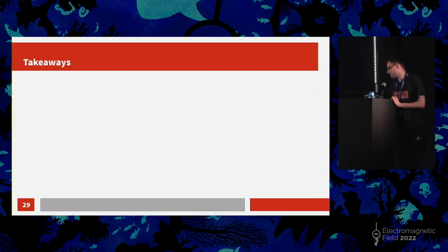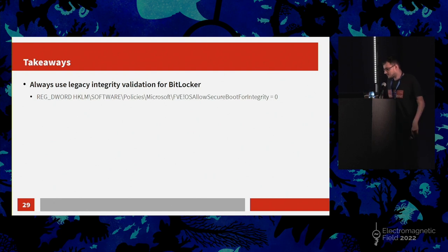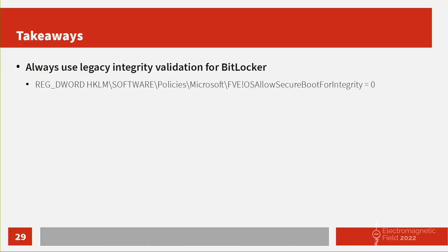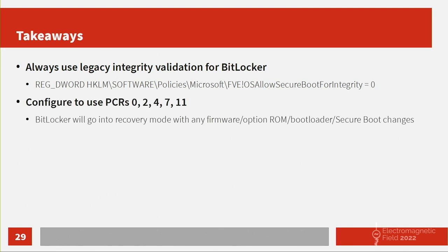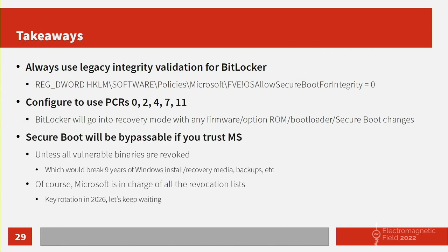So, what can be done with this? You always want to use legacy integrity validation for BitLocker — there's a registry entry for it. Configure it to use PCR 0, 2, 4, 7 (the non-default), and 11. Any change will cause BitLocker to go into recovery mode, and Secure Boot will also be enabled, providing its benefits. If you trust Microsoft, Secure Boot will always be bypassable unless all vulnerable binaries are revoked. Microsoft is in charge of all the revocation lists, but the keys will be rotated in 2026, so maybe we can wait for that.